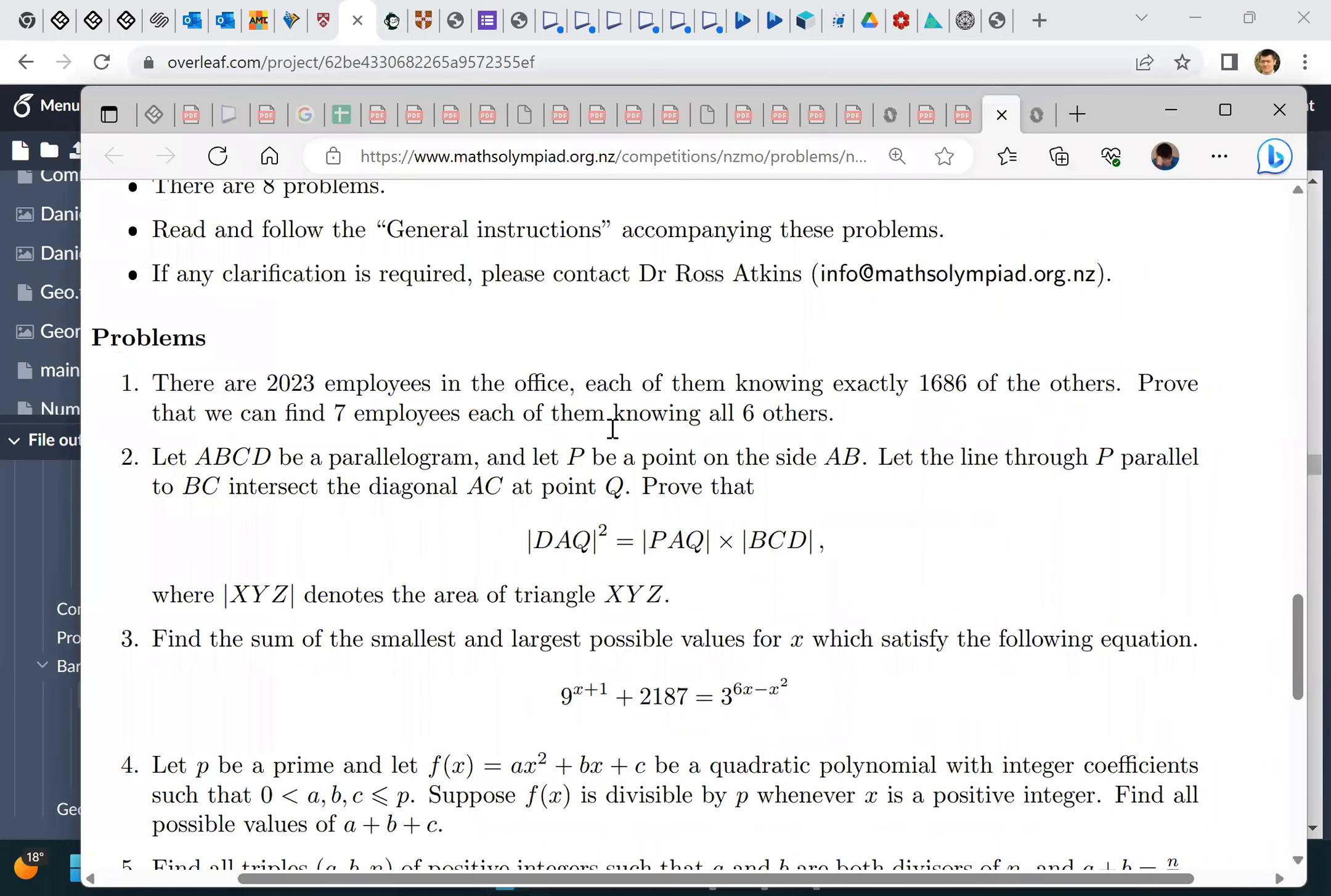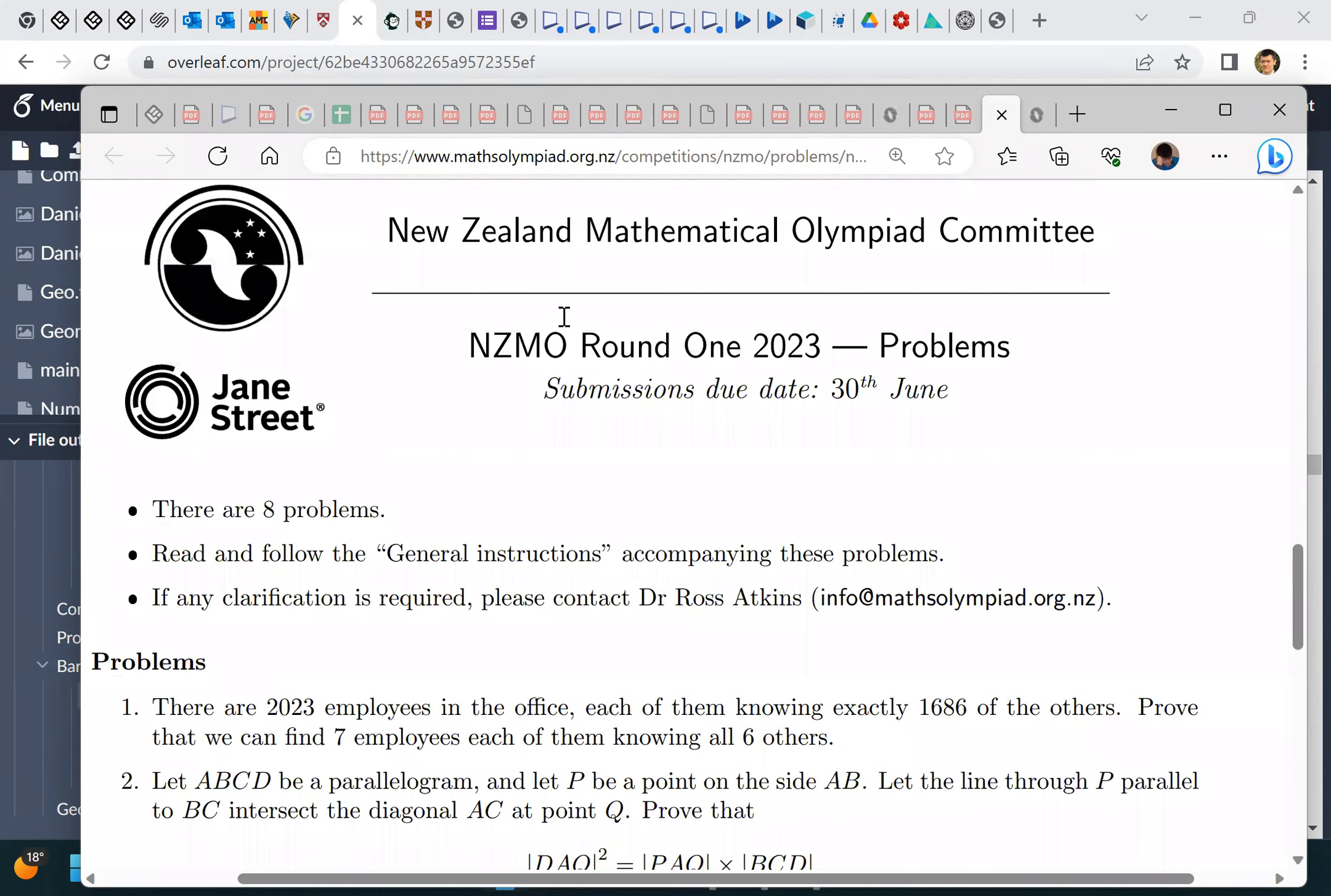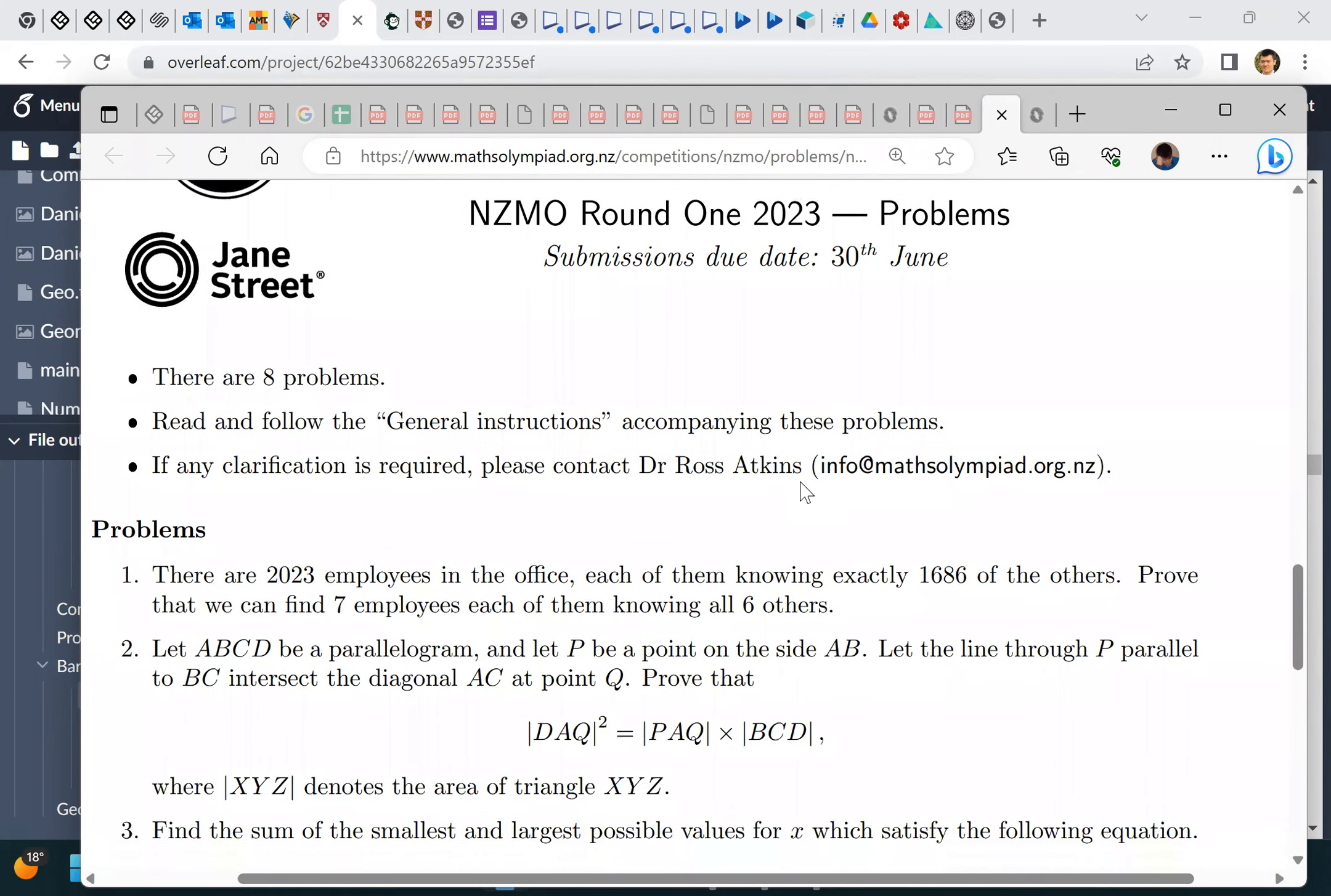Okay, so I don't know if you remember but the New Zealand Math Olympiad Round One is out. Yeah, and I guess we just did a Barry bash of question two. If you want the video I can send it to you, but I was saving question one for you.